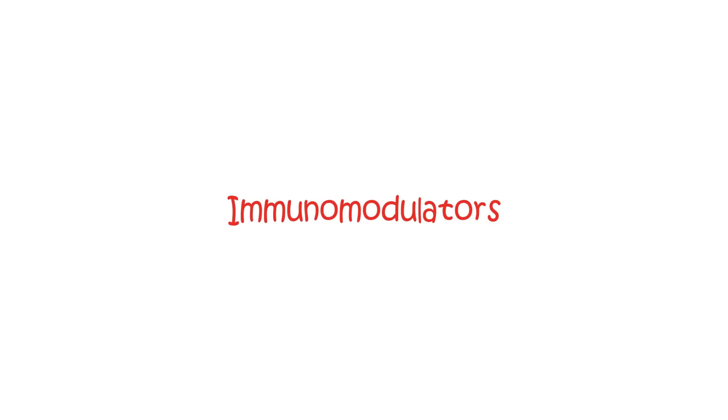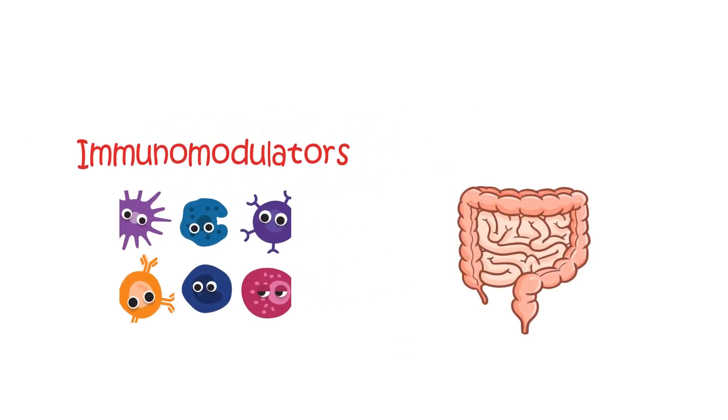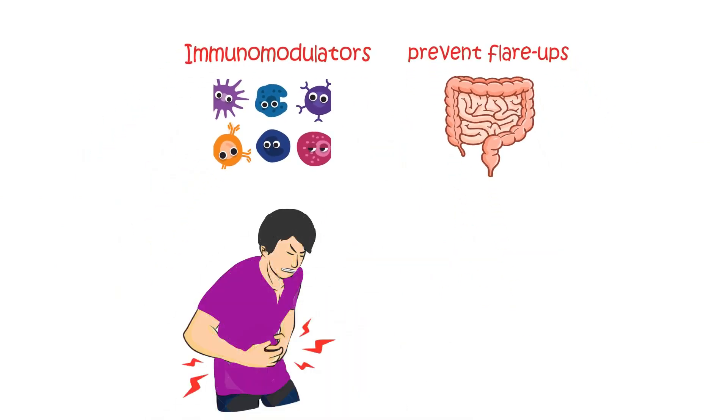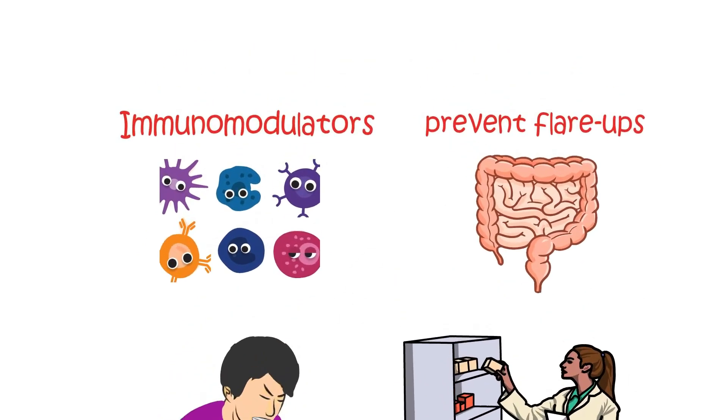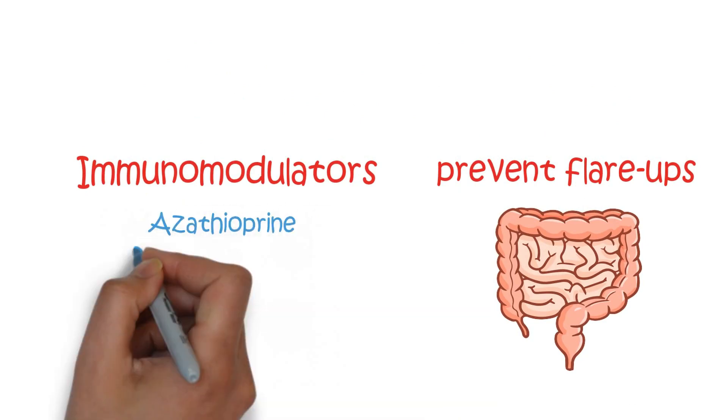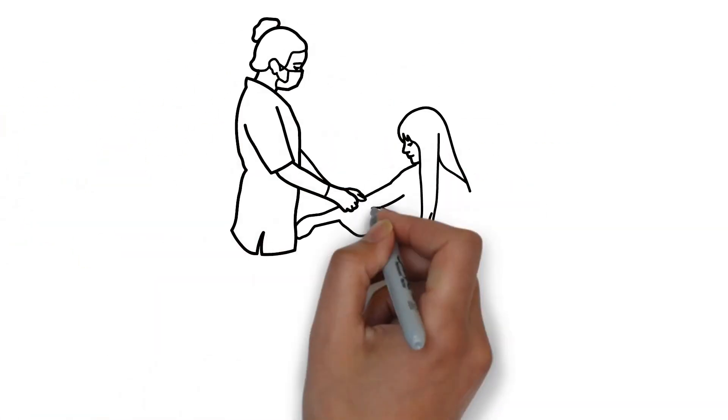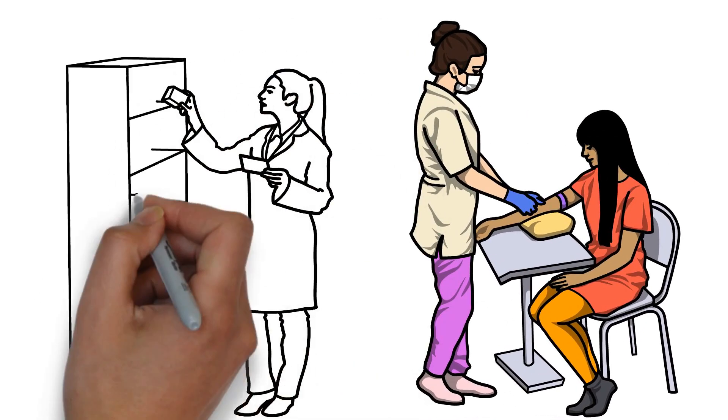Immunomodulators are medications that work by suppressing the immune system, which can help reduce inflammation in the colon and prevent flare-ups. They are typically used in more severe cases of IBD if the symptoms persist despite using steroid medication. Some common immunomodulators include azathioprine, mercaptopurine, and methotrexate. You will need regular blood tests to monitor for potential complications whilst on these medications.